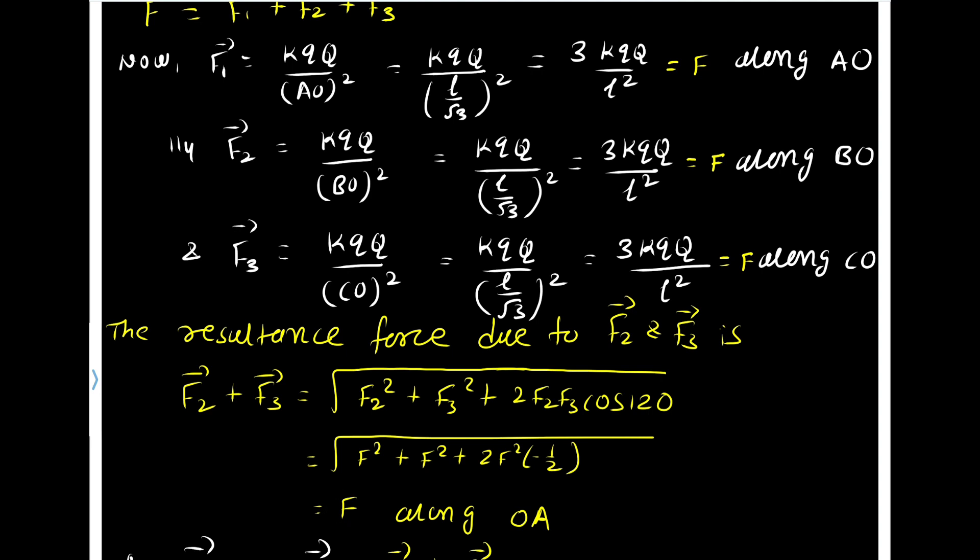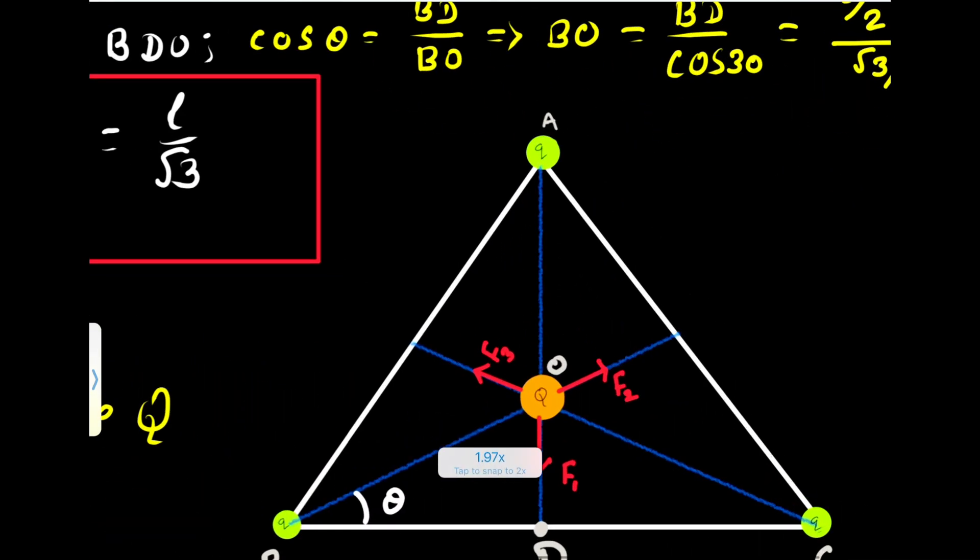See, whenever two forces of equal magnitude, or any two vectors having equal magnitude, but the angle between them is 120, the resultant will also be same. So here the resultant force of F2 and F3 is F and it is along O to A.